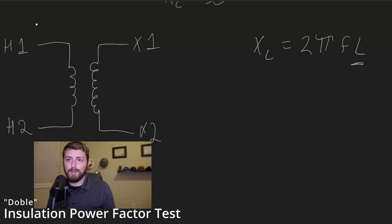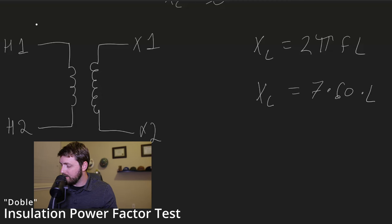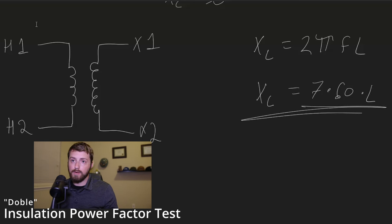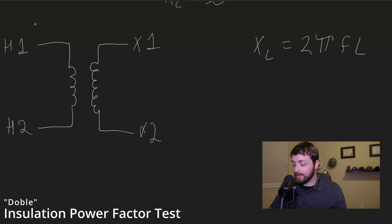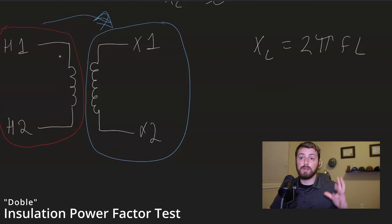That formula is X_L equals 2 pi f times L. So previously we had simplified this down to X_L equals zero, right? But that's for DC because this is zero. And again I don't necessarily need to know what this L term is in henries, inductive inductance in henries. You're not going to find the inductance of a transformer winding on the nameplate data. But what we are going to know is that this is now a pretty big number, because this is what, seven times sixty times L. This is a very real number now.